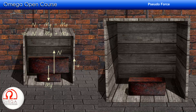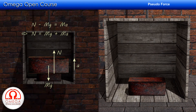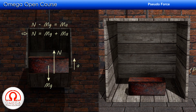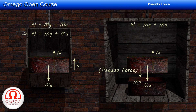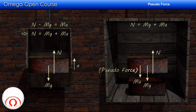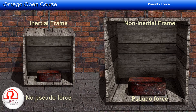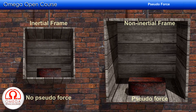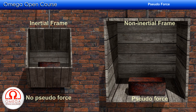Comparing the two situations: when looking at the block from the ground, the frame is inertial, so there is no pseudo-force, but the block is accelerating and net force must act on it. When looking at the block with respect to the box, the frame is non-inertial, so pseudo-force acts, but the block is at rest and net force is zero. The choice of reference frame affects both the apparent motion and the forces in the analysis.